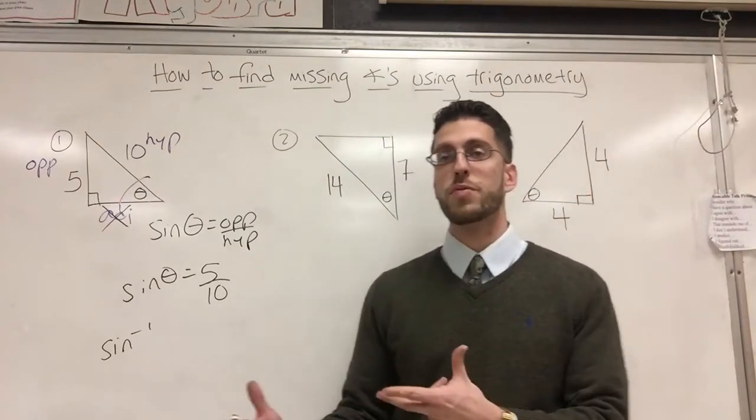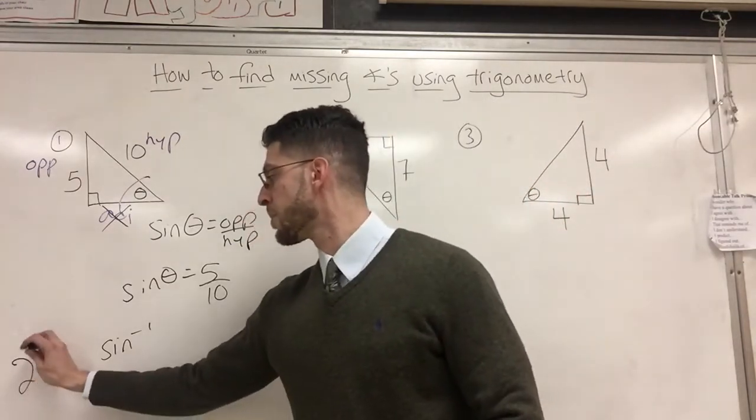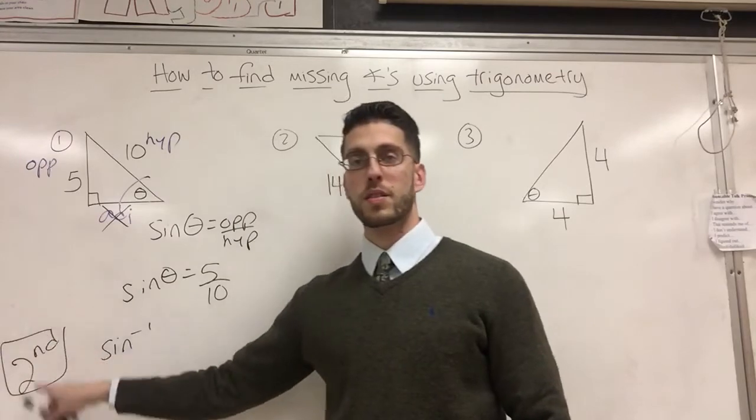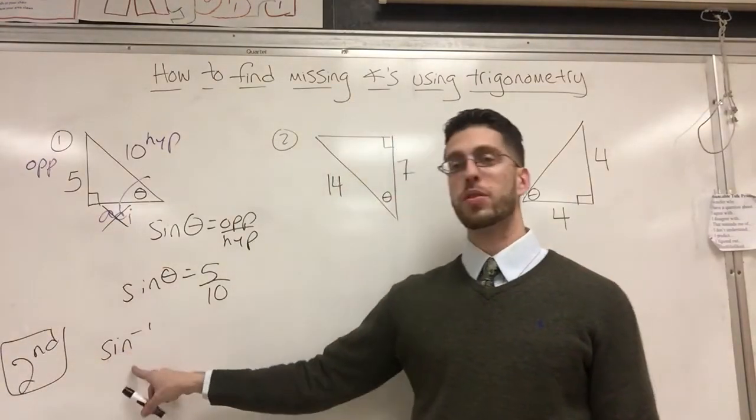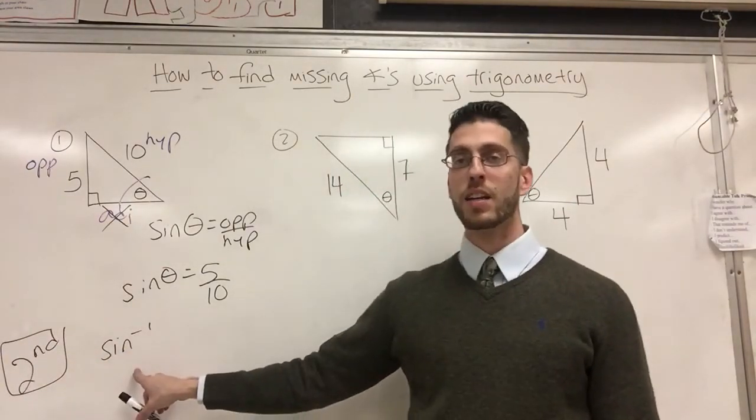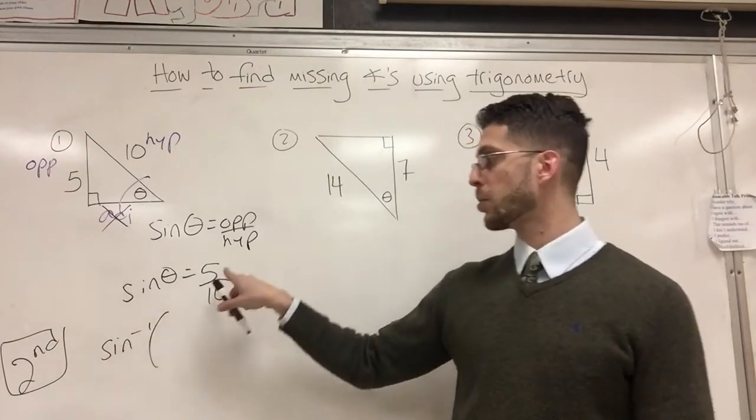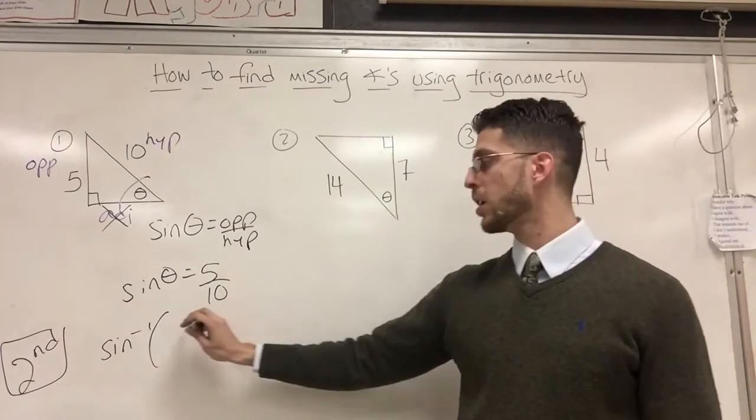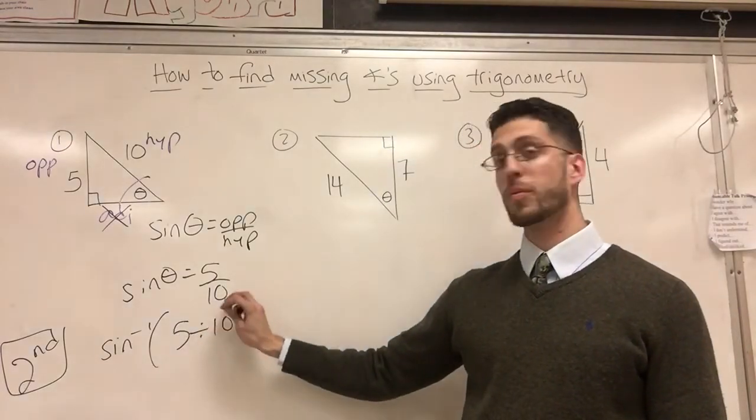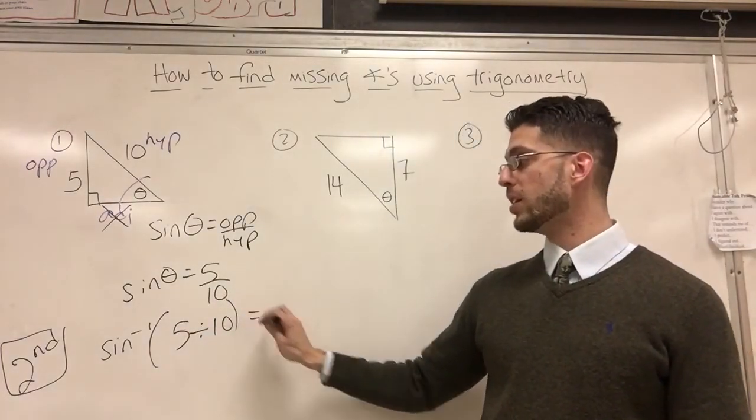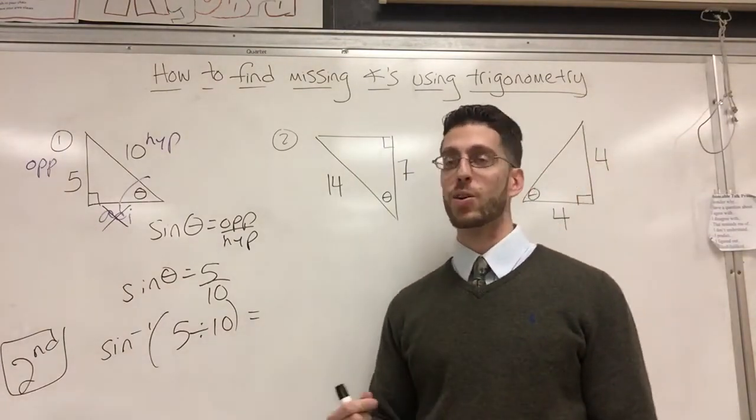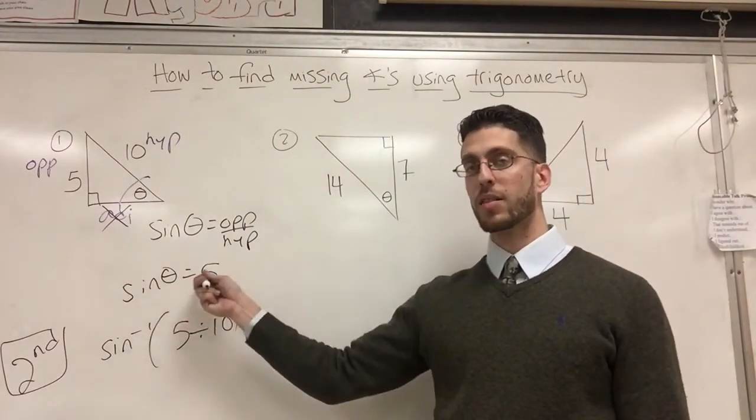Most calculators, you're probably going to have to press shift or second. And when you press second, this pops up on the screen. You press second, sine, and the sine inverse button pops up on the screen. You might see parentheses right next to it. Put in the answer, the 5 over 10. 5 over 10. Over means divide. When you press enter, it will give you the angle that has a sine of 5 over 10.